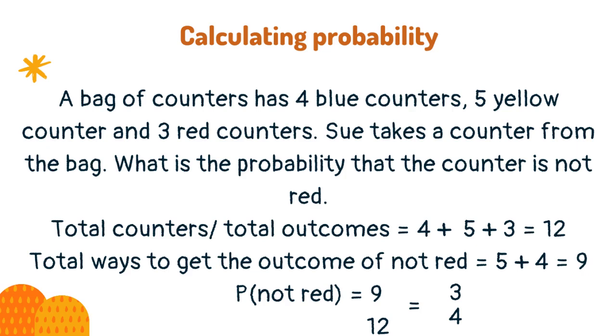Then find the number of outcomes that give the desired result of not being red, so add the number of blue and yellow counters — this gives 9 counters. This gives the answer of 9 over 12, which can be cancelled to 3 quarters.